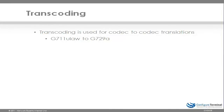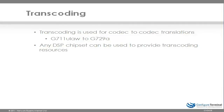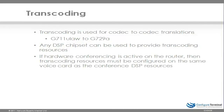Transcoding is used for codec-to-codec translations, for example G.711 ULAW to G.729A. Any DSP chipset can be used to provide transcoding resources. Please refer to the DSP calculator to specify and size DSPs for specific hardware. If hardware conferencing is active on the router, then transcoding resources must be configured on the same voice card as the conference DSP resources. The DSP calculator will make your life a lot easier when sizing DSPs.